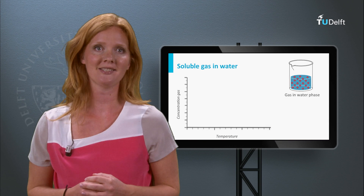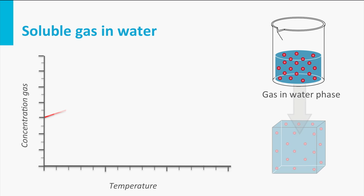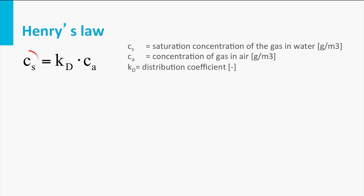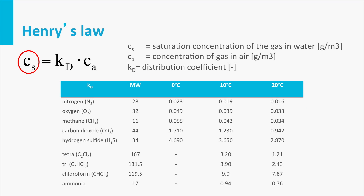Gases are, to some extent, soluble in water. The concentration of a gas in the water phase is an equilibrium linear to the concentration of the gas in the air phase. This equilibrium is called Henry's law. The equilibrium concentration is also called the saturation concentration. For oxygen in water in equilibrium with the atmosphere, the saturation concentration is approximately 12 mg per liter at 10 degrees Celsius.